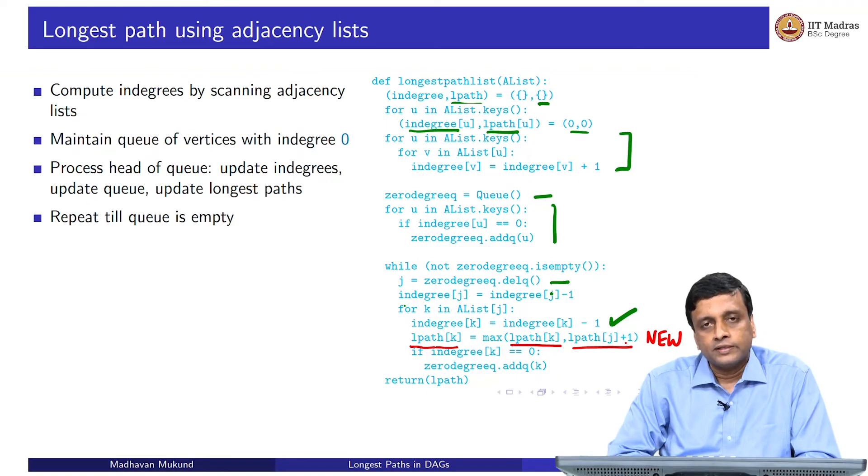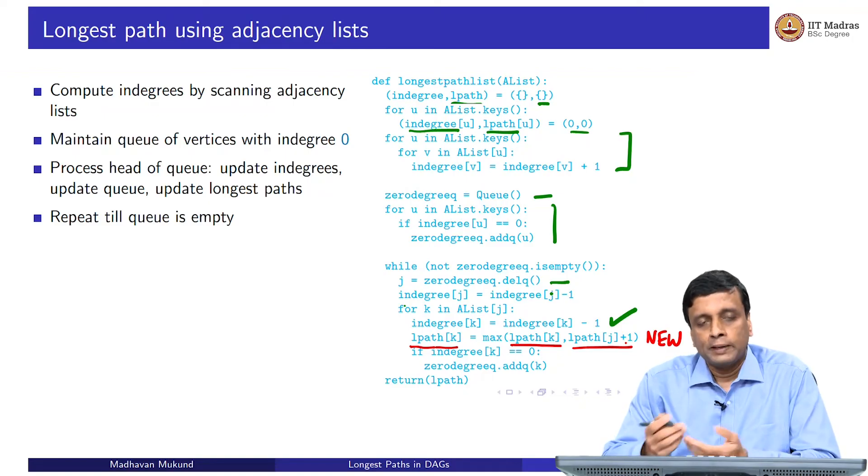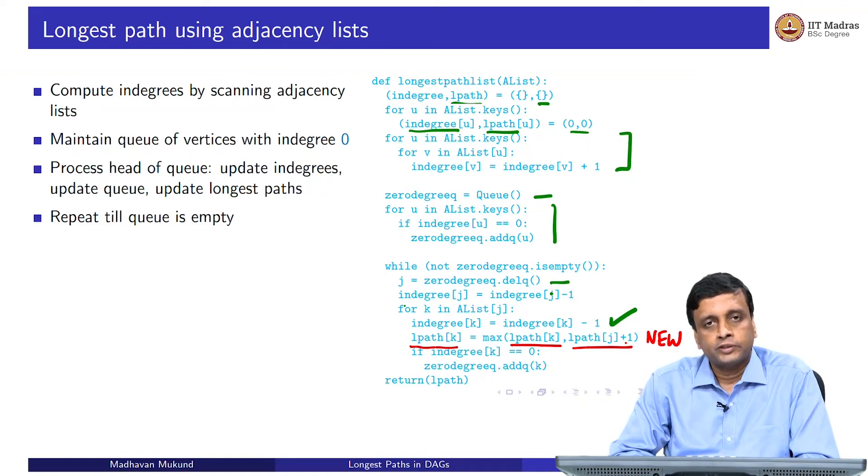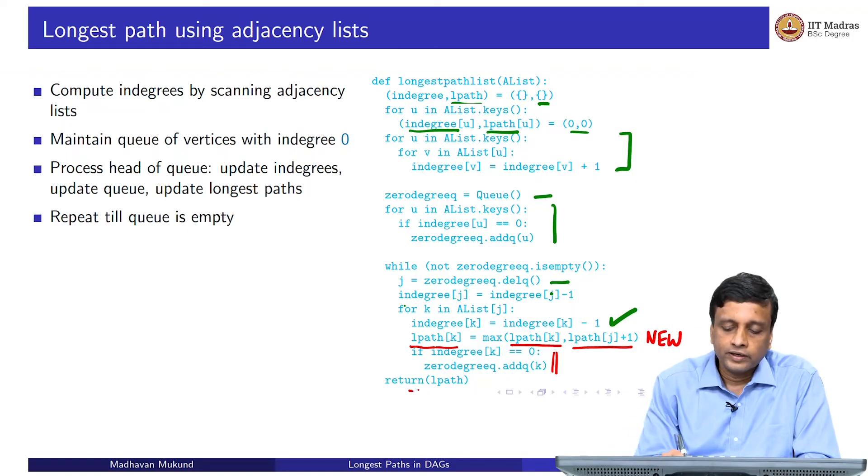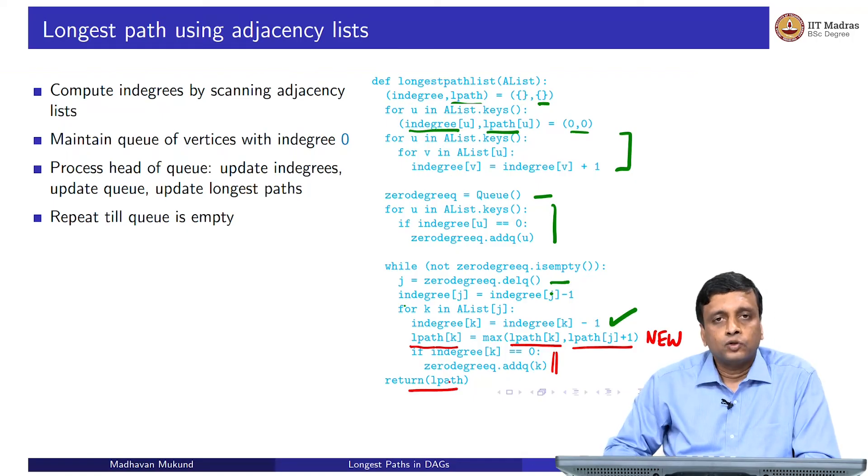This is the only difference actually between the topological sort algorithm and the longest path algorithm, except for the fact that we can also keep track of the topological sort here if we wish, but we have not done so. Then, as before, if we discover that the newly decremented degree has become 0, we put it into the queue so that it will be processed when its turn comes. Finally, instead of returning the topological sort list, we are returning this longest path dictionary.